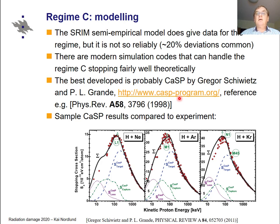The SRIM code, which we will deal with later, does give data for this regime, but it is not fully reliable — deviations of around 20% are quite common, because SRIM is essentially an averaging fit to some of this experimental data.